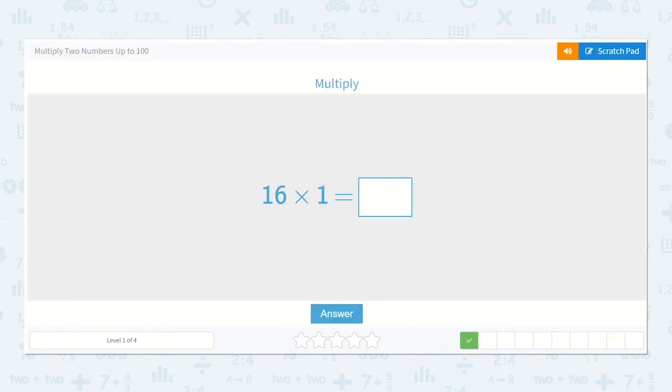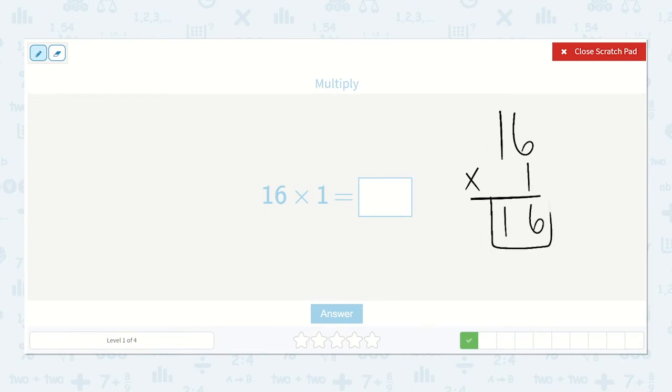Here we have 16 times 1. We could write it out 16 times 1. 1 times 6 is 6, and 1 times 1 is 1. But I also know that 16 just one time would just be 16.